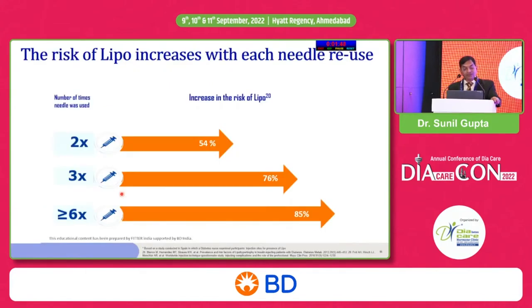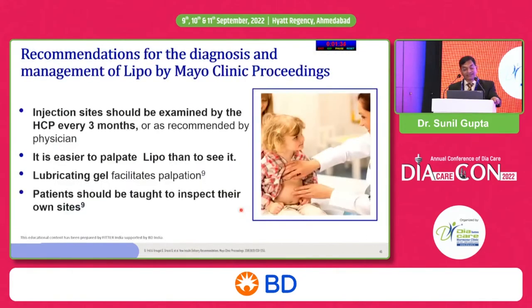The impact of lipohypertrophy includes around 0.55% higher HbA1c, mean dose requirement 10 units higher, higher rate of unexplained hypoglycemia, glycemic variability, and more frequent diabetic ketoacidosis. A CLAMP study showed 21% lower insulin exposure at the lipo site versus normal tissue, and 70% higher blood glucose when insulin is given at the lipo site. If a needle or syringe is reused more than six times, the risk of lipohypertrophy increases from 50% to nearly 80%; the recommendation is to use insulin needles only once.